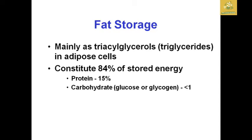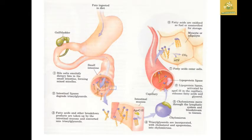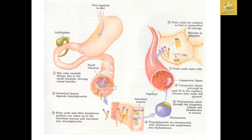Lipids are fat storage compounds, mainly made up of triacylglycerols — also called triglycerides — which are stored in the adipose tissue of human cells. They constitute about 80% of storage energy; proteins account for about 15% of energy, and carbohydrates such as glucose and glycogen account for less than 1% of stored energy in the living body. Fats ingested in the diet are emulsified by bile juice, and intestinal lipase degrades triacylglycerides; the final fatty acids or oxidized fuels are re-esterified for storage in adipocyte tissue.